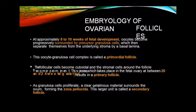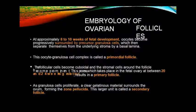For ovarian follicle embryology, it takes 8 to 10 weeks in fetal development when the oocyte progressively develops precursor granulosa cells, which are separated from the basal lamina and from the underlying stroma. The precursor granulosa cells surround the oocyte. This oocyte and granulosa cell complex is called the primordial follicle.